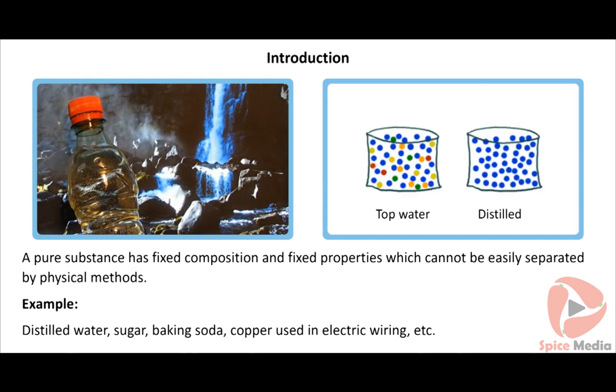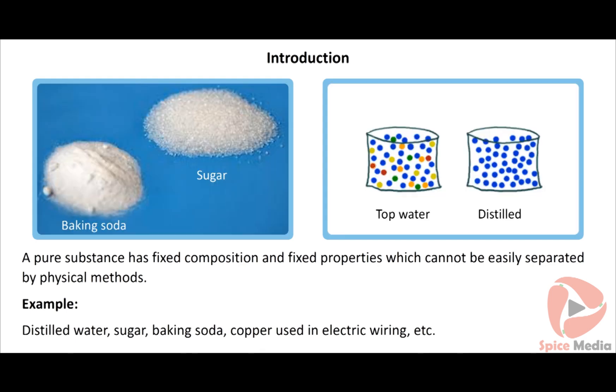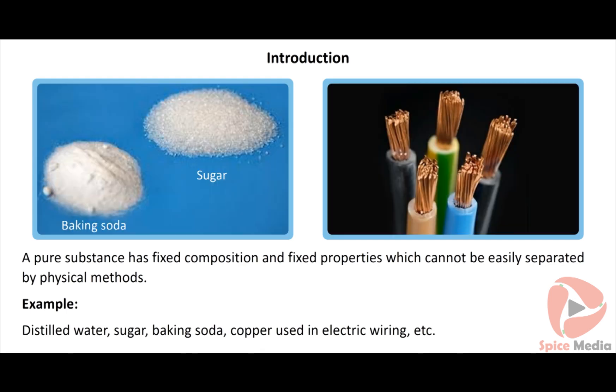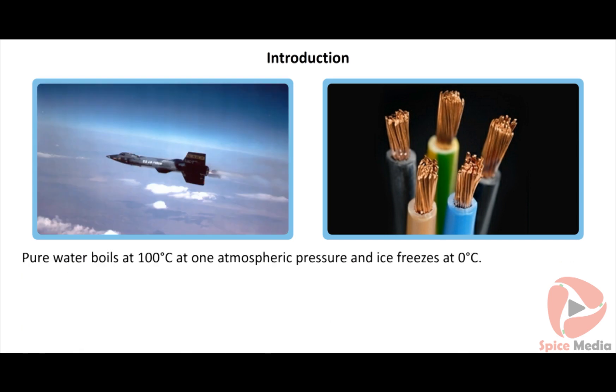A pure substance has fixed composition and fixed properties which cannot be easily separated by physical methods. Examples include distilled water, sugar, baking soda, and copper used in electric wiring.